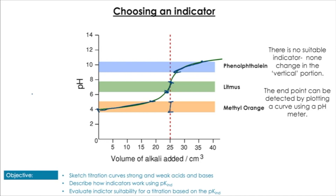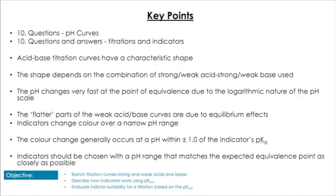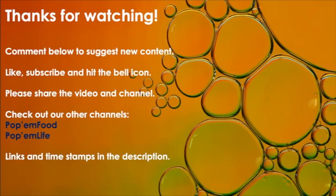The main takeaways: acid-base titration curves have a characteristic shape dependent on the strength or weakness of the acids and bases used. The vertical component of the graph determines the end point, and we line up this vertical component with the ranges of indicators from the data booklet to find a suitable indicator. Make sure to practice applying these ideas. Thanks for watching — comment, like, subscribe, hit the bell icon, and check out our other videos.